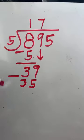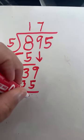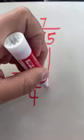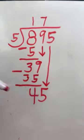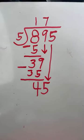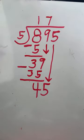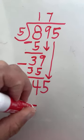So 39 minus 35 equals 4. We have a remainder of 4. Next, we bring down the 5. So now we have to figure out how many groups of 5 go into 45. So counting by 5s.